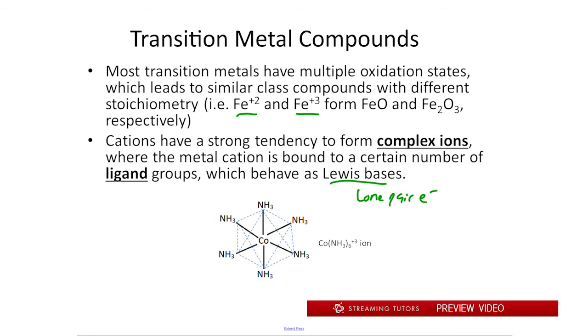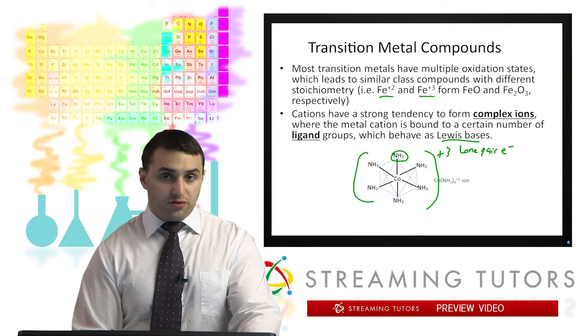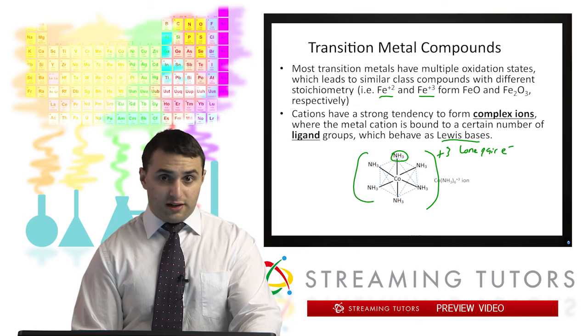So here we have what's called the Co(NH3)6^3+ ion. So this entire species is just an ionic species plus 3 charge. So we see that cobalt is in the center and then we have these ammonia ligands bonded to it. And this forms an octahedral kind of geometry which is characterized by the blue dashed lines.